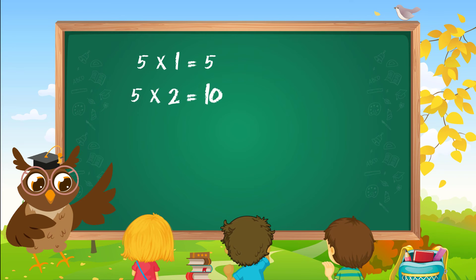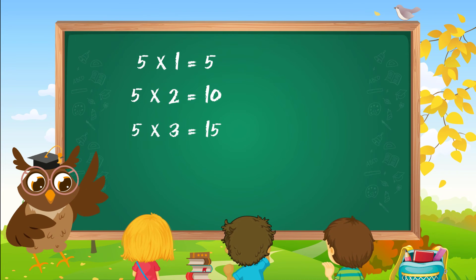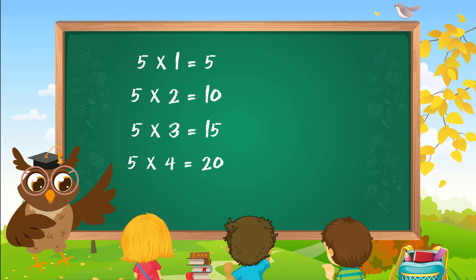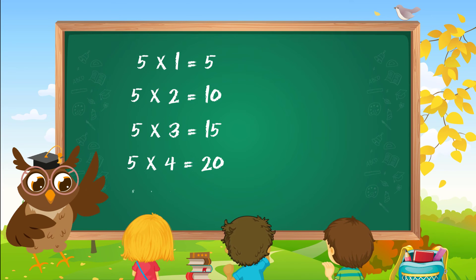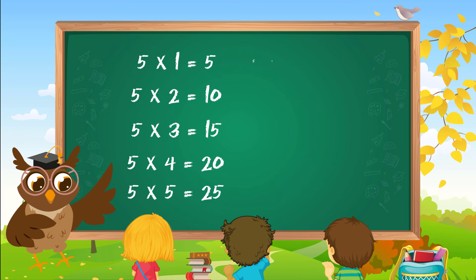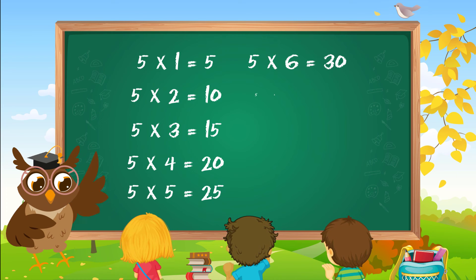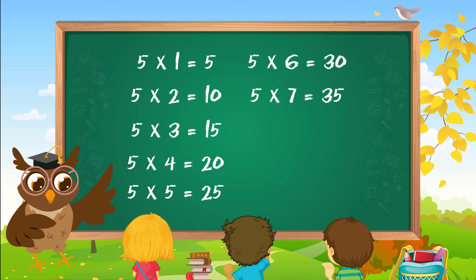Five 2s are 10. Five 3s are 15. Five 4s are 20. Five 5s are 25. Five 6s are 30. Five 7s are 35.